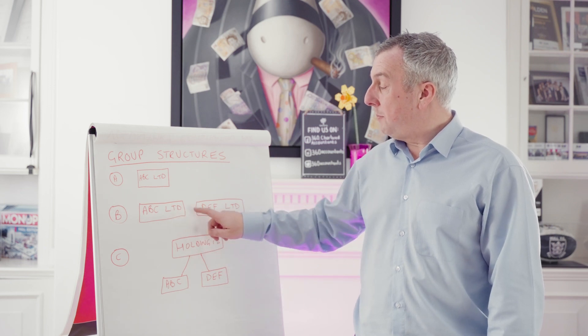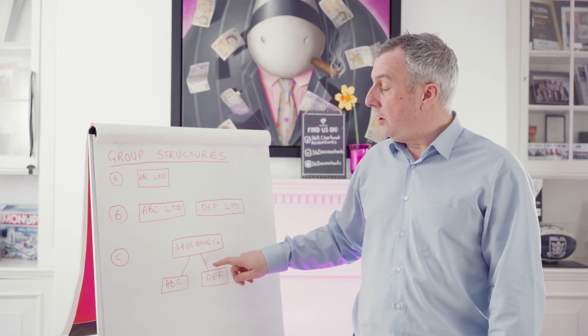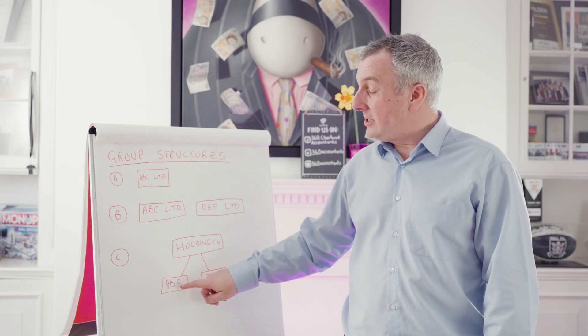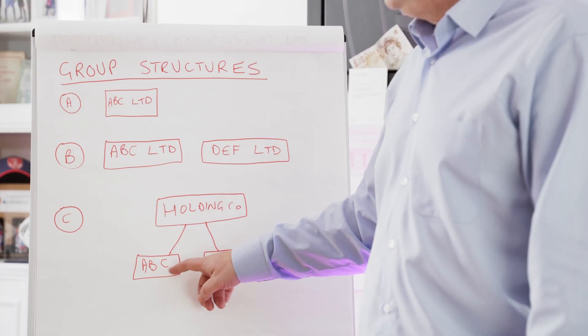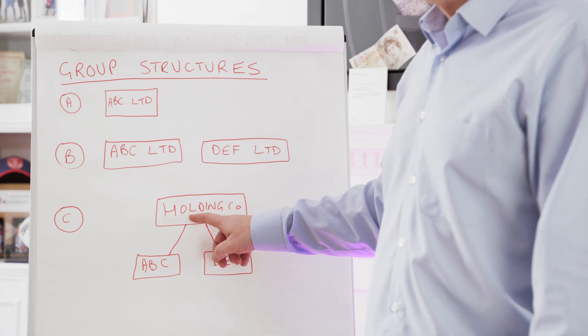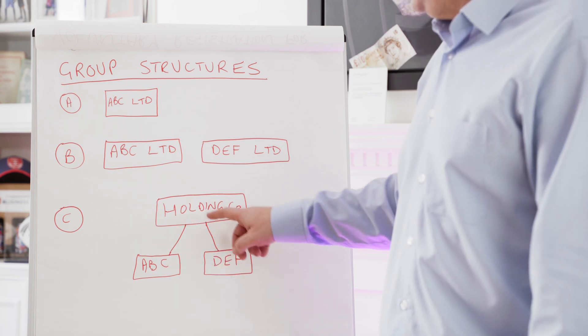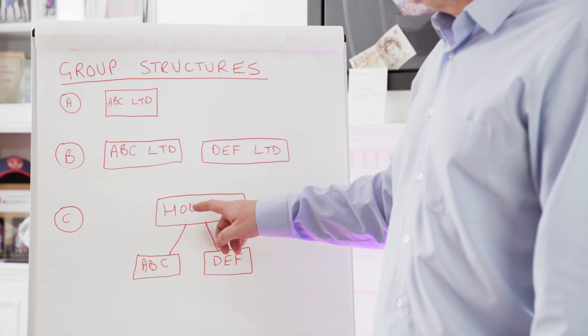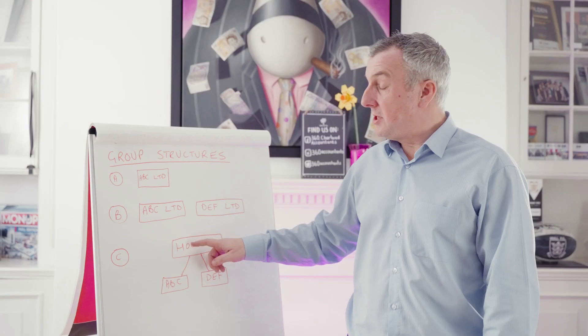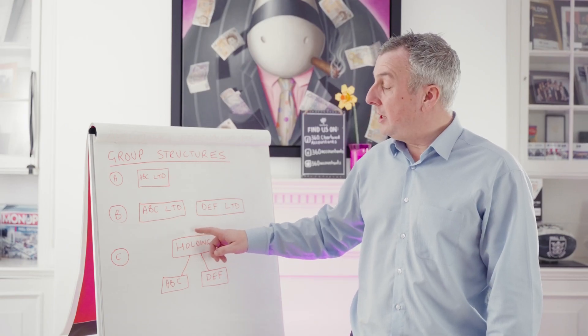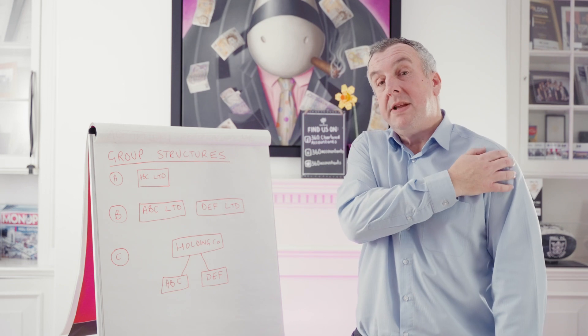Very similar to the scenario above. But what happens is when ABC makes a profit, it would pay dividends up to the holding company, as would DEF. And then the shareholders have a decision to make about whether those profits stay in the holding company or whether they're paid out as dividends.